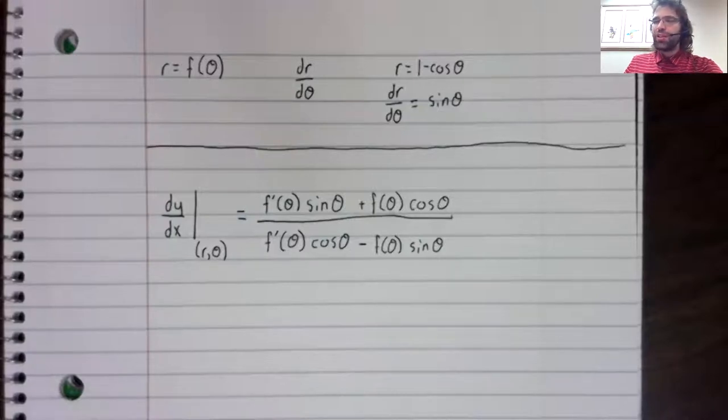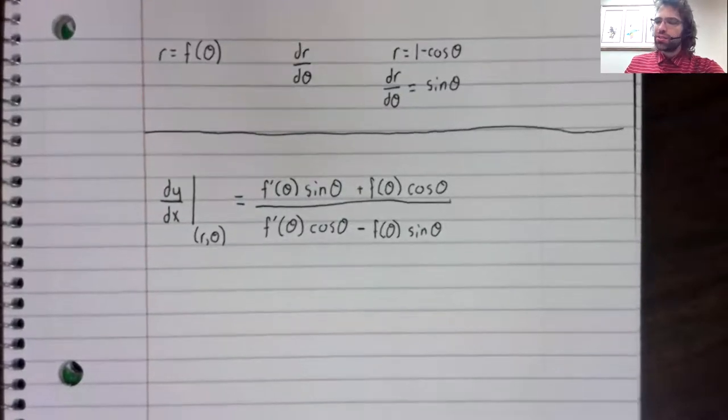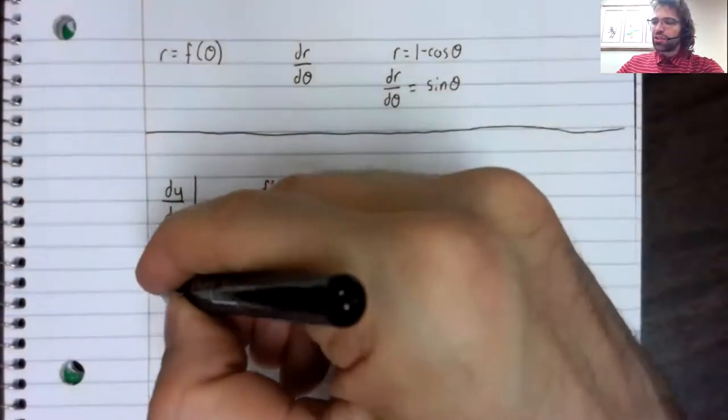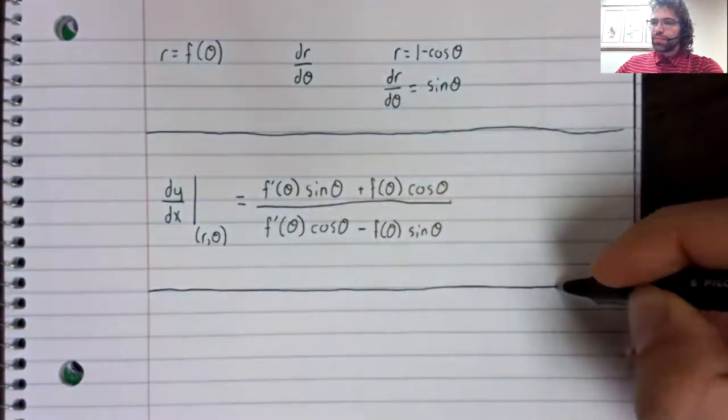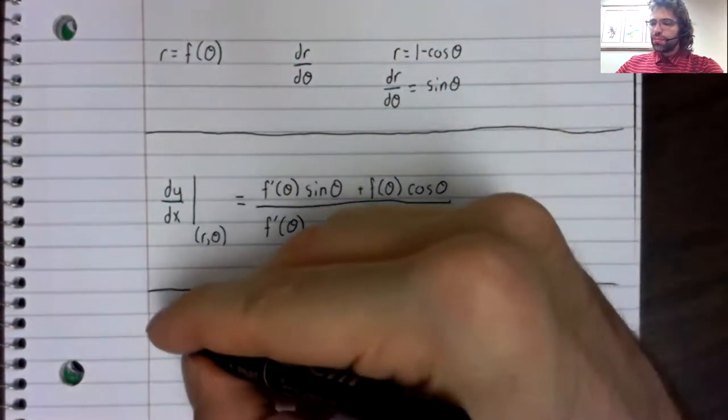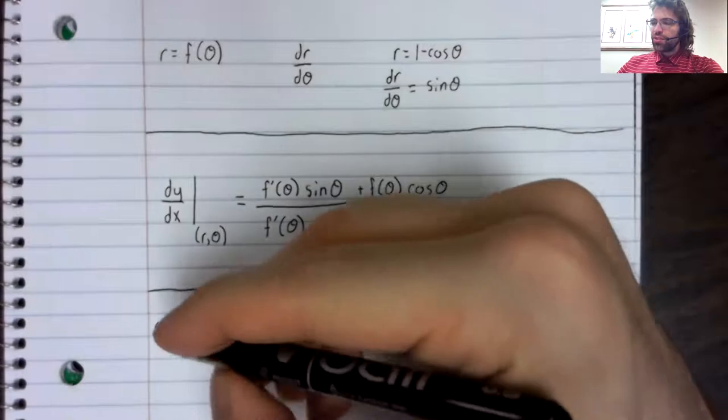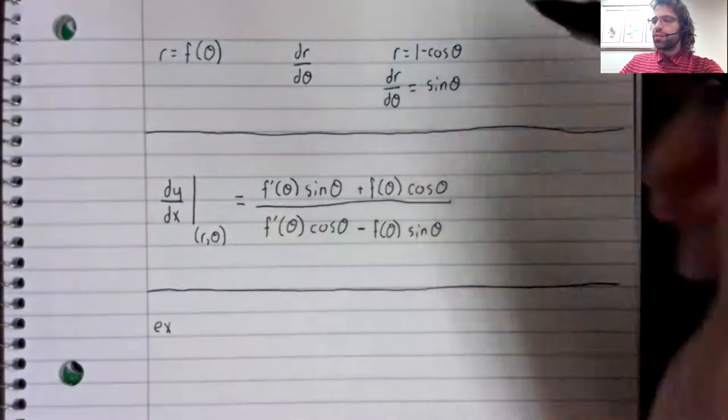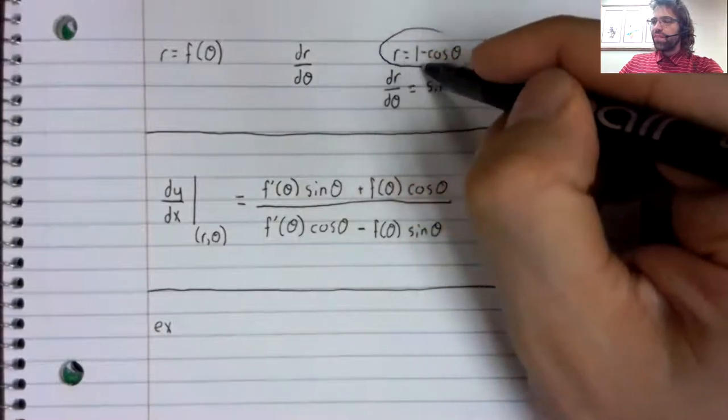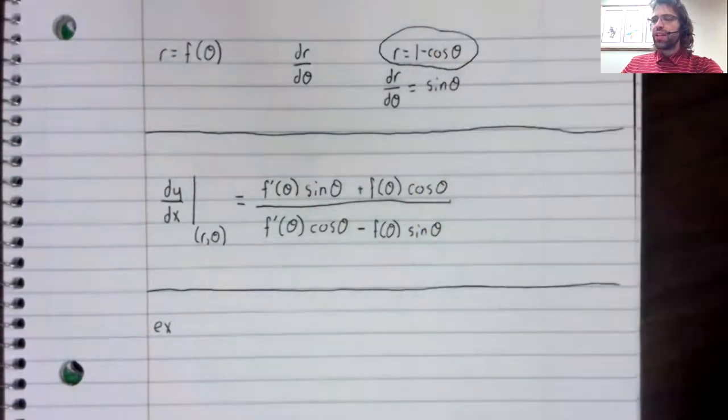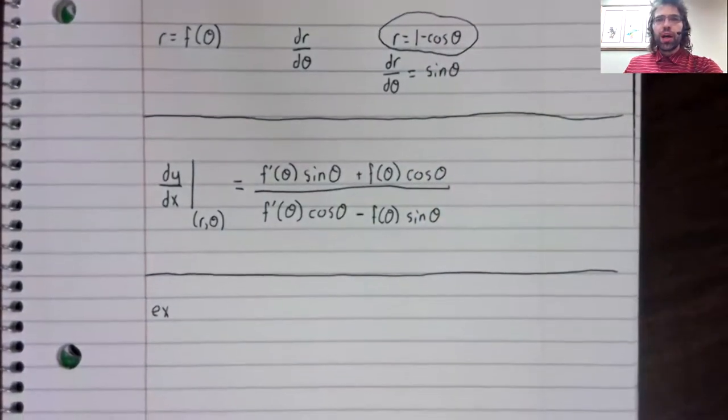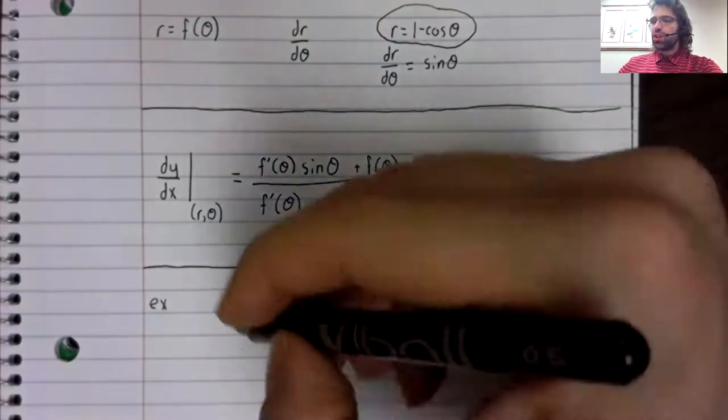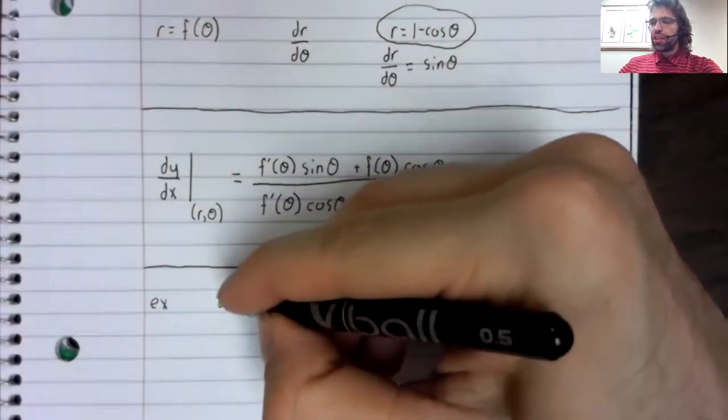Certainly, I freely concede that. Let's find dy/dx for this example, r equals one minus cosine of theta.